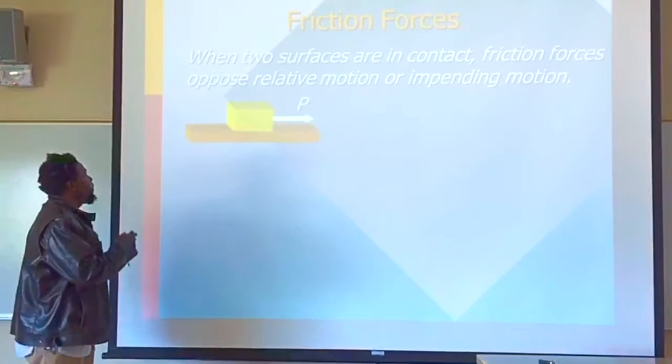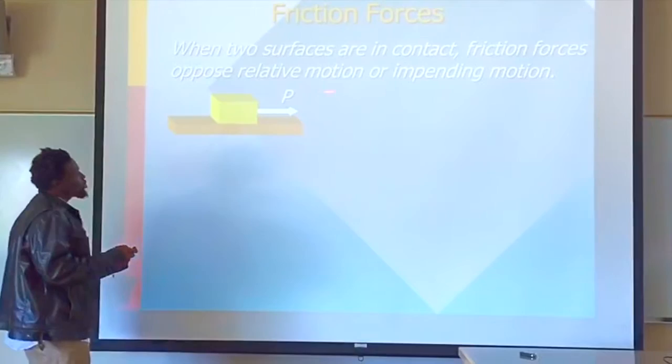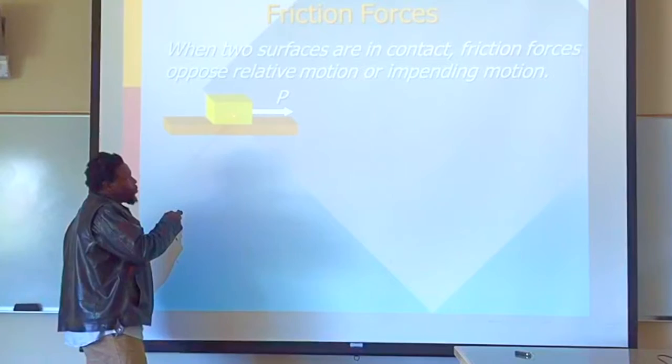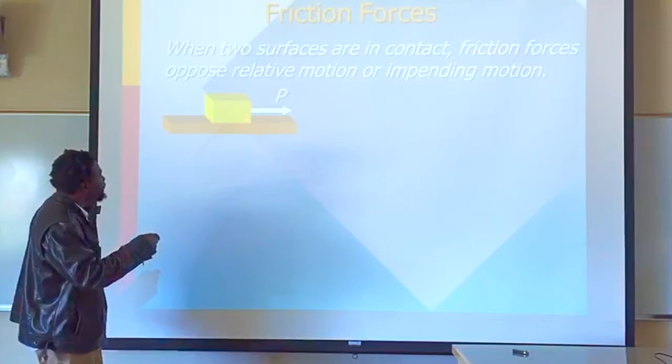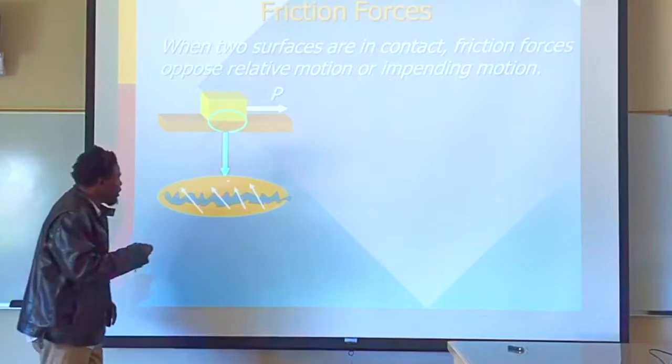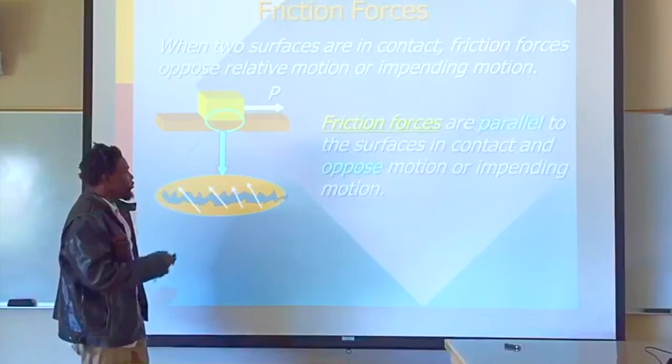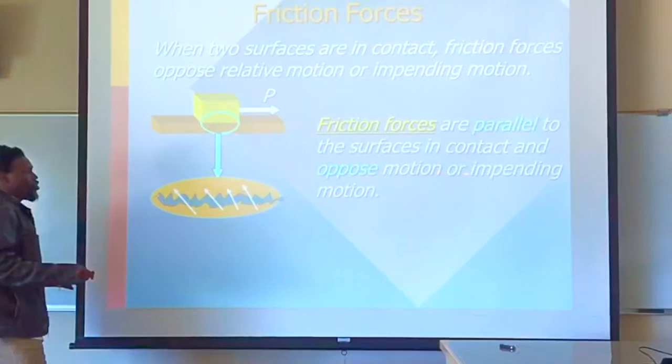When two surfaces are in contact, frictional force opposes the relative motion or impeding motion. So with this pulling force, this block wants to move, or we are trying to move this block in this direction. However, the friction force is going to act in the opposite direction. The friction force results because of the different surfaces, and therefore there is a molecular interaction. Frictional forces are parallel to the surface in contact and oppose the motion or impeding motion.